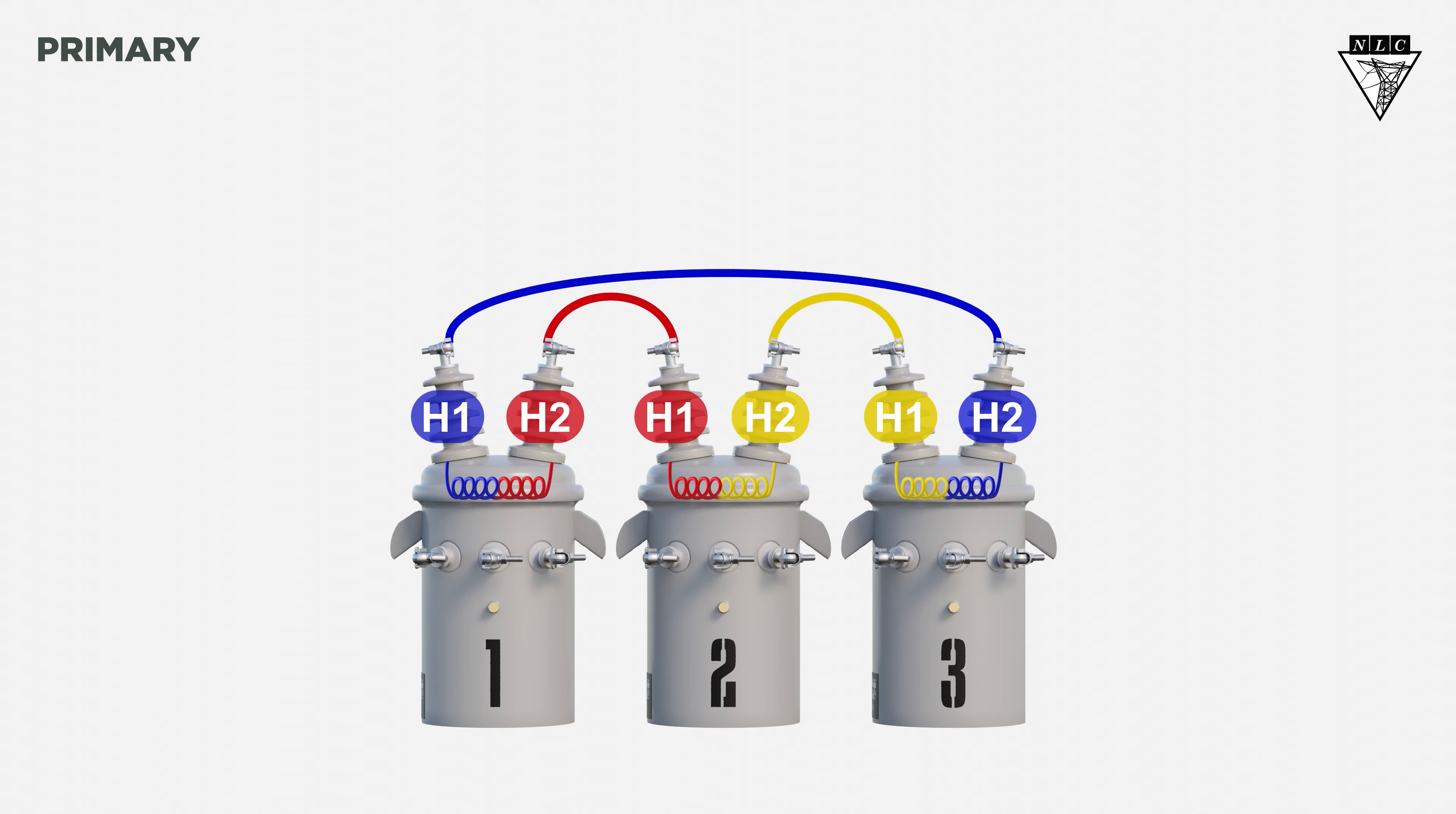Run jumpers from each H2 bushing up to the phases, starting with A phase, then B phase, and ending on C phase.